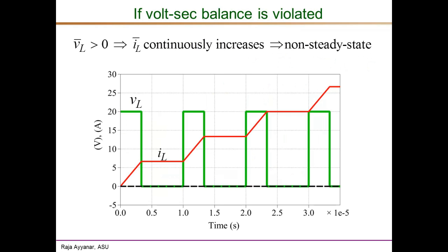Consider another waveform: same 20 volts during the on interval, but zero voltage during the off interval. The VL average is 20/3 — positive, not zero. In response, the current rises at slope 20/L during the on interval, and during the off interval slope m2 equals zero, so the current remains flat. In the next cycle it rises again, remains flat, and so on — the average current is monotonically increasing, which is again not steady state because volt-second balance is violated.